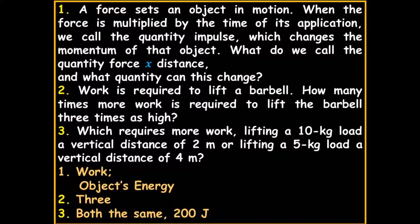A force sets an object in motion. When the force is multiplied by the time of its application, we call that quantity impulse, which changes the momentum of that object. What do we call the quantity of force times distance? Force times distance — that is going to be work, or the object's energy. That's pretty much the definition.